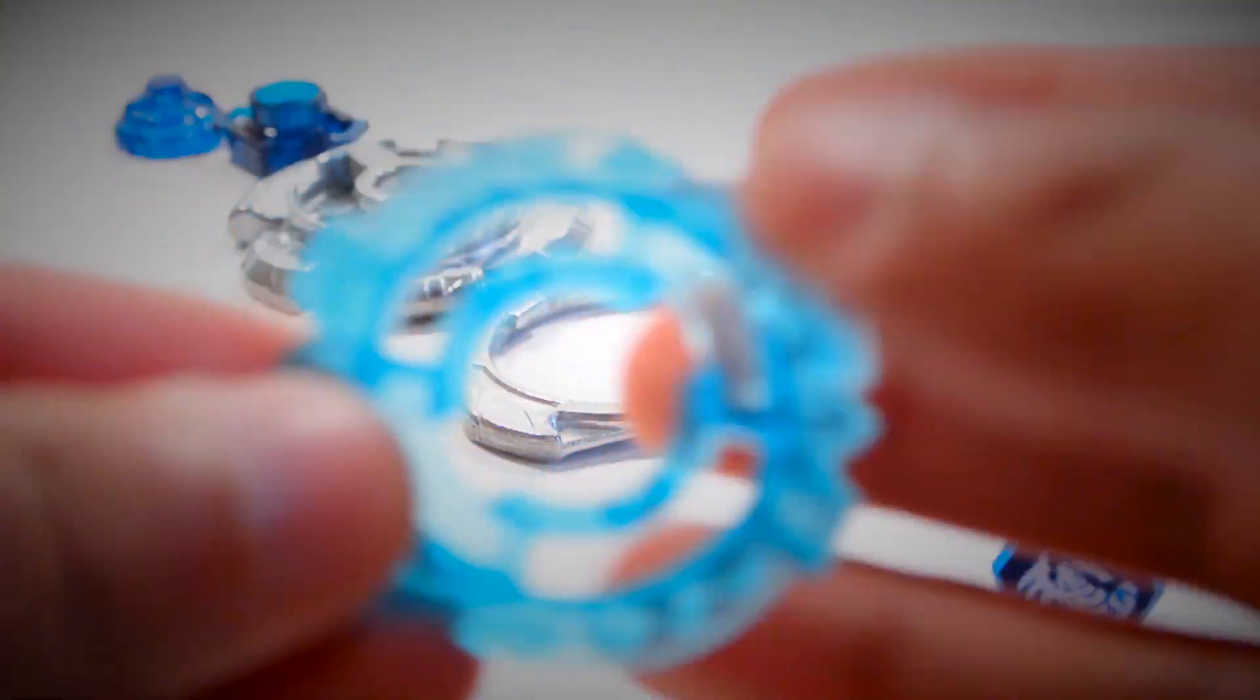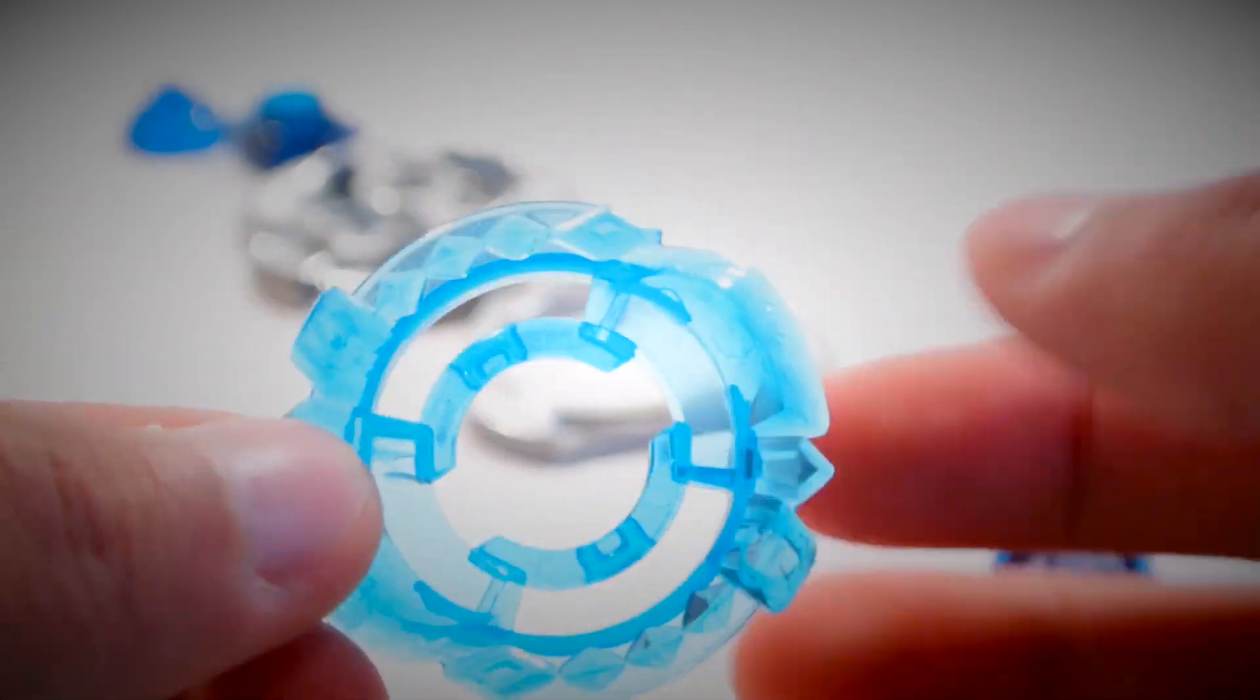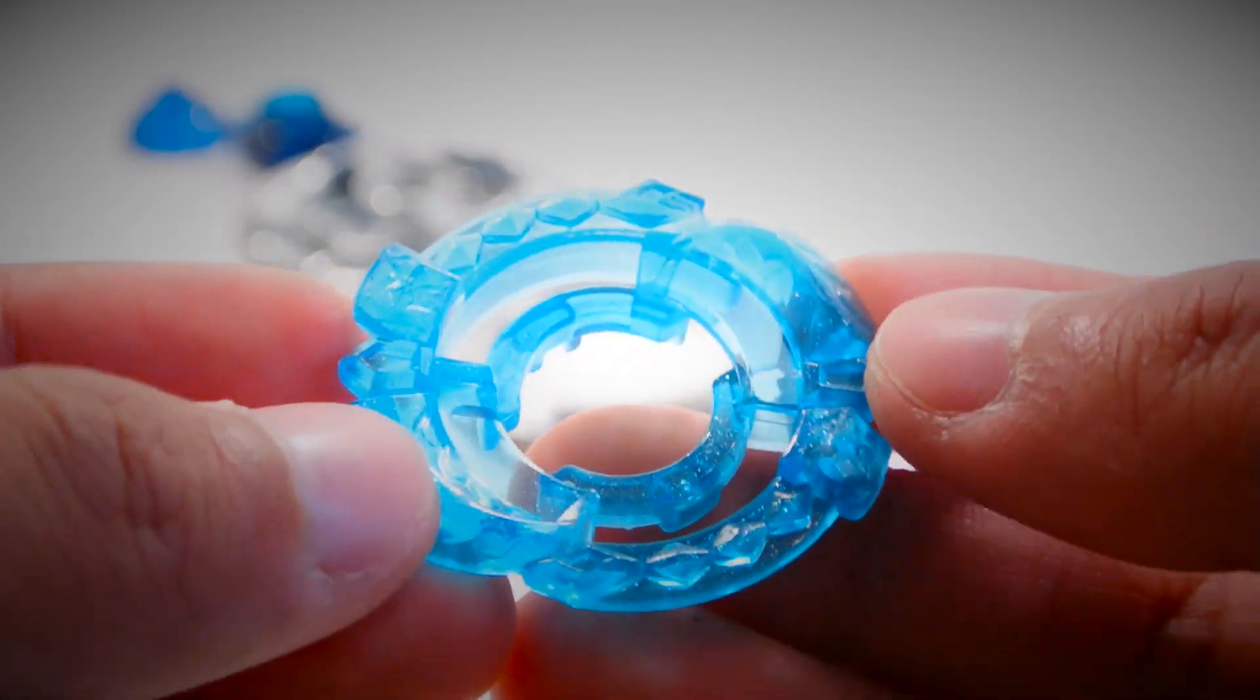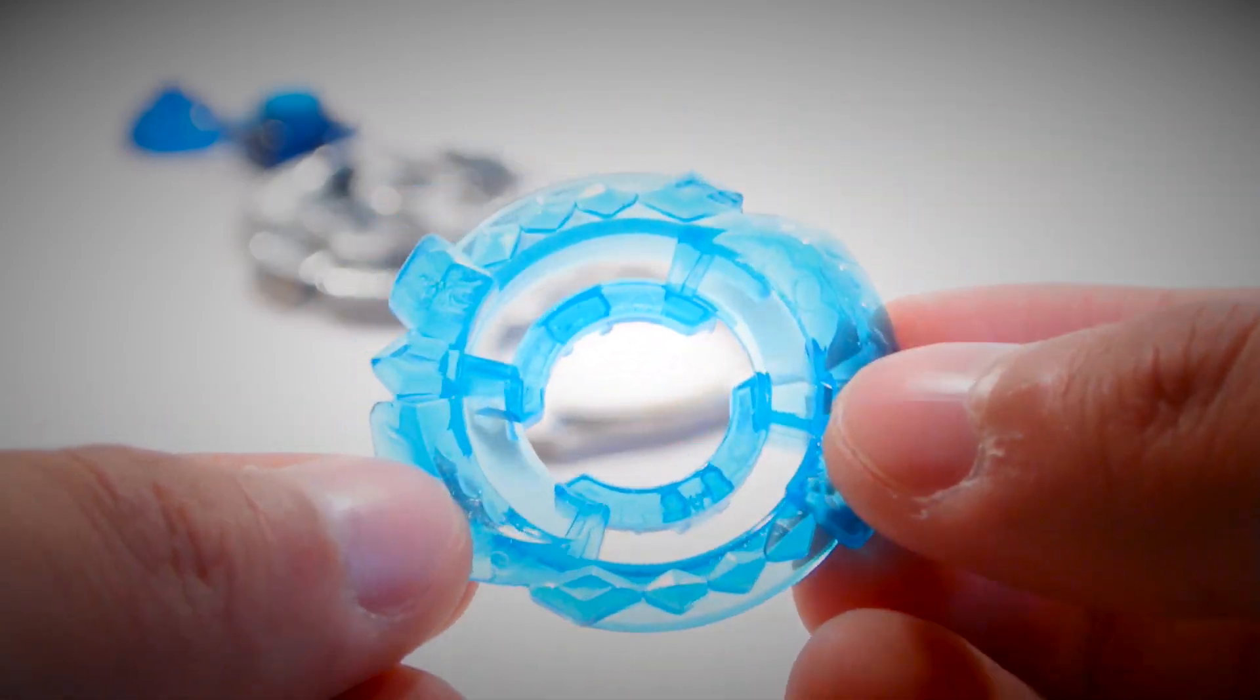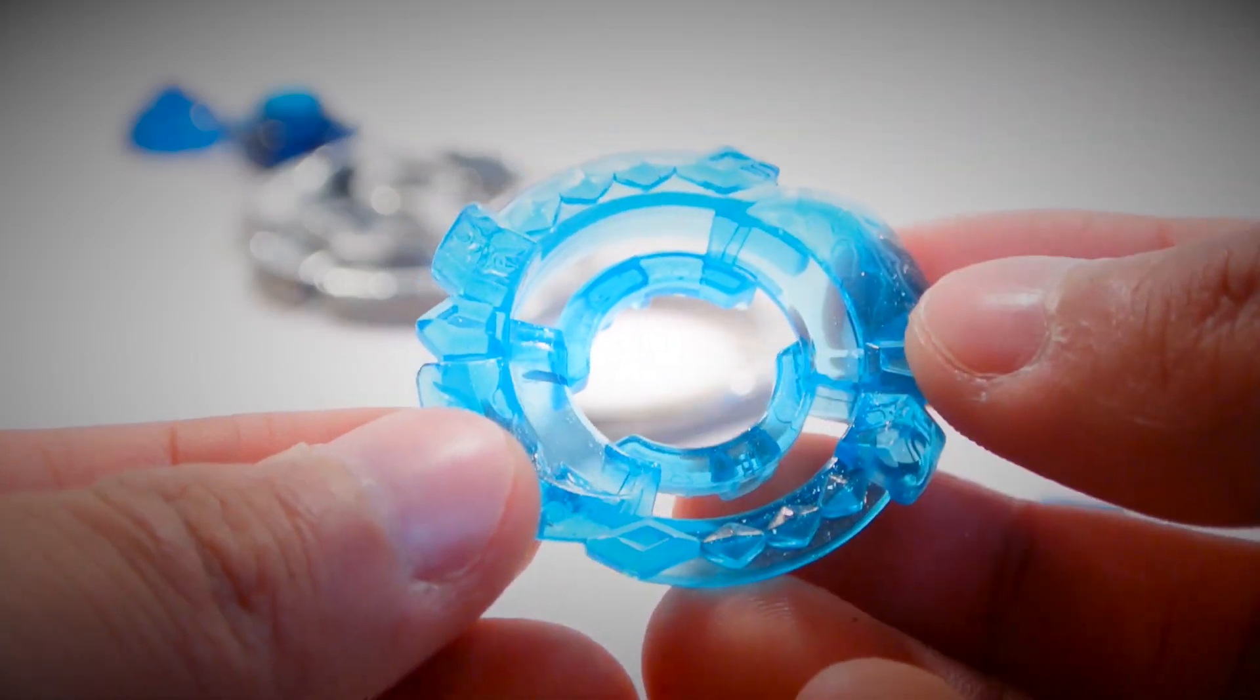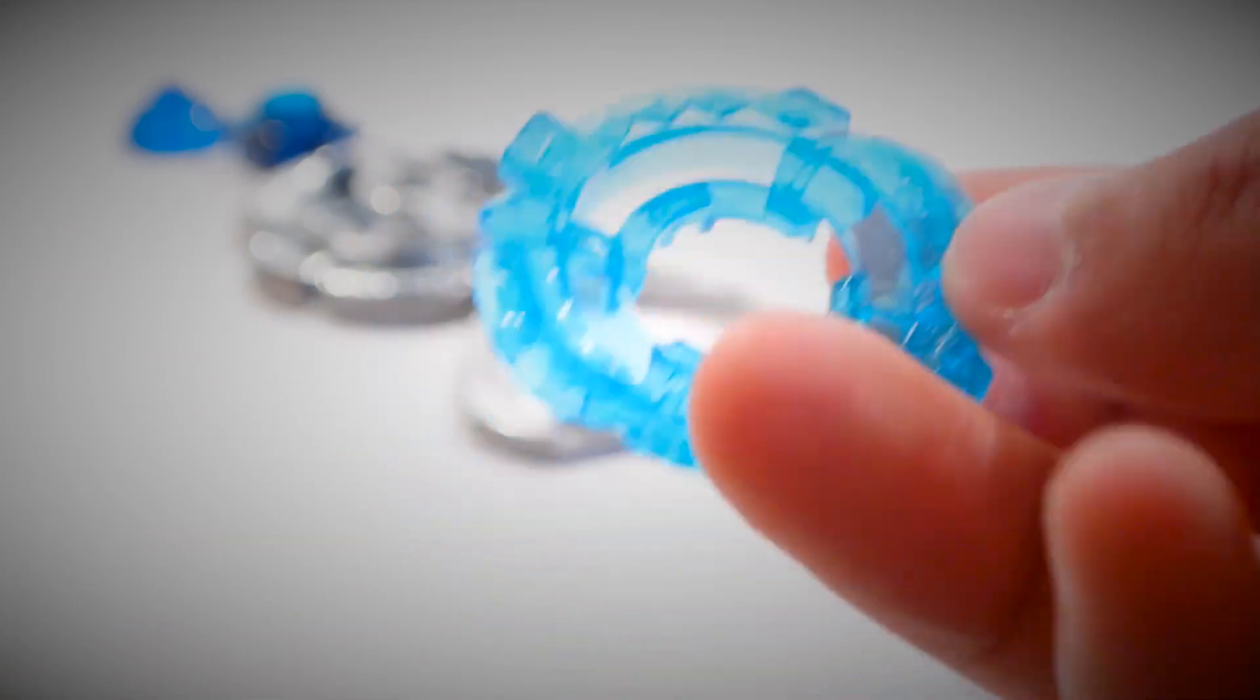Here is the clear wheel, this is Dragonis. It's a nice clear blue and an awesome clear wheel. I really like the design. I think it's supposed to resemble a right-spin L-Drago in a sense, because it's a dragon Bey and it's right-spin. There's not really many dragon right-spin Beyblades in Metal Fight Beyblade.